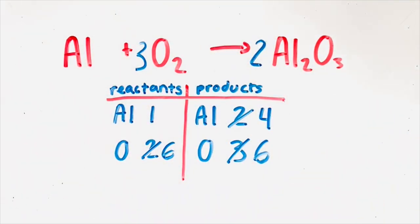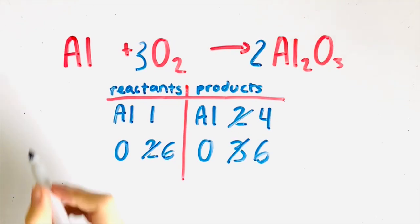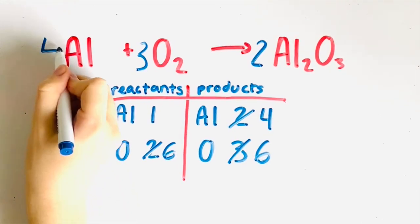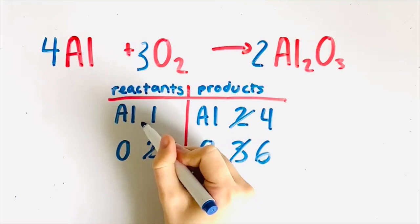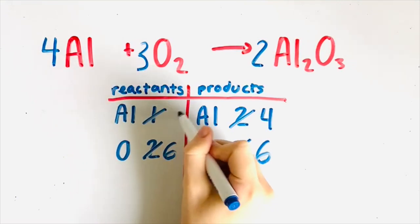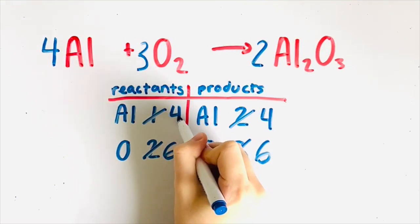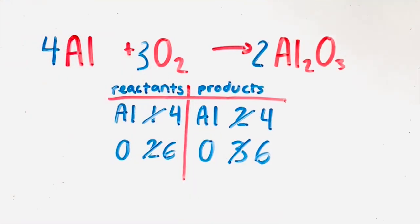The only thing left to balance is the aluminum on the reactant side. You know that the lowest common multiple between one and four is four, so you would write a coefficient of four in front of the aluminum atom on the reactant side. Cross out the one in the table and replace it with four. The equation is balanced because there are now four aluminum atoms on both sides and six oxygen atoms on both sides.